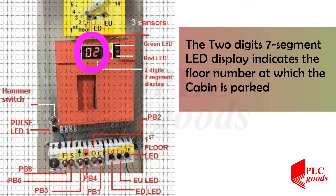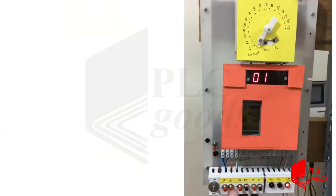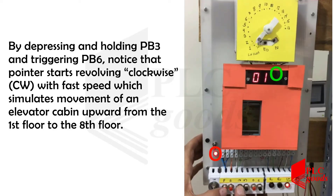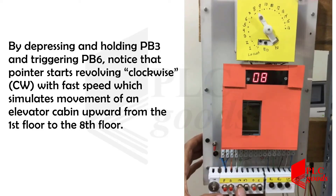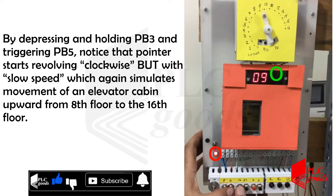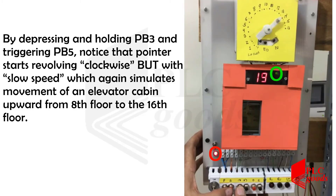The two-digit 7-segment LED display indicates the floor number at which the cabin is parked. By depressing and holding PB3 and triggering PB6, notice that the pointer starts revolving clockwise with fast speed, which simulates movement of the elevator cabin upward from the first floor to the eighth floor. By depressing and holding PB5, notice that the pointer starts revolving clockwise but with slow speed to simulate movement upward from the eighth floor.